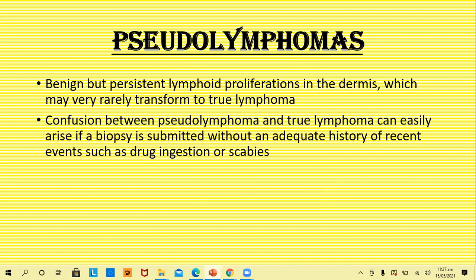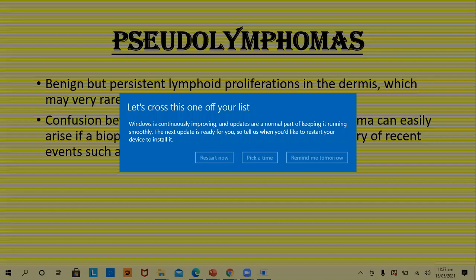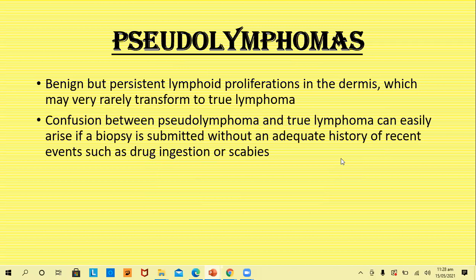Pseudo-lymphomas. The pseudo-lymphomas are benign but persistent lymphoid proliferations in the dermis, which may very rarely transform to true lymphomas. In real sense, these are not lymphomas, but just lymphoid proliferations which look like lymphomas. Confusion between pseudo-lymphomas and true lymphomas can easily arise if a biopsy is submitted without an adequate history of recent events such as drug ingestion or scabies. Pseudo-lymphomas are usually initiated by drugs, scabies, insect bites, etc.